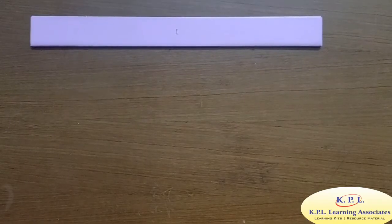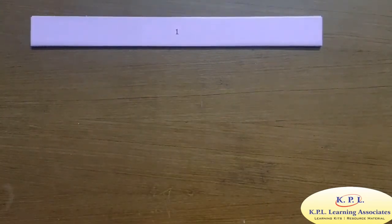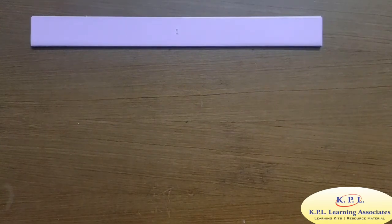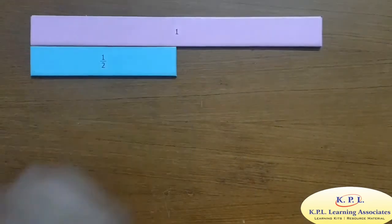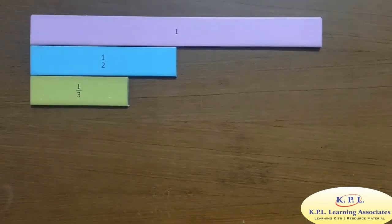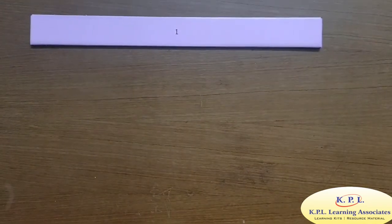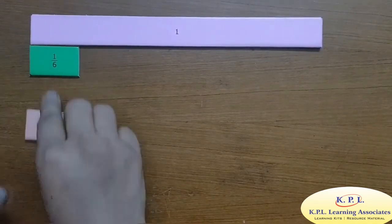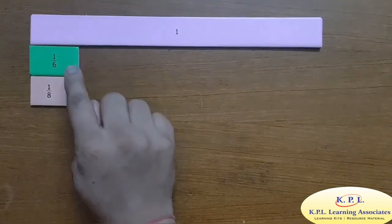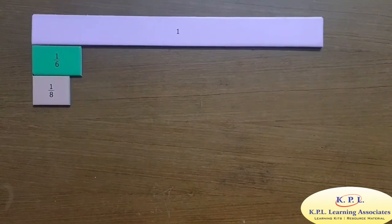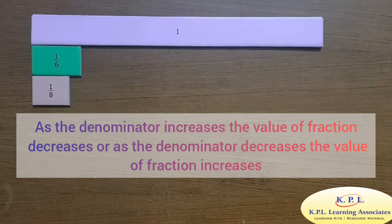Now let us compare some unit fractions where the numerator is one. Here I have one by two and one third. We can see that one by two is greater than one third. Let us take one more example. Here I have one sixth and one eighth. We can see that one sixth is greater than one eighth. We can observe that as the denominator increases, the value of the fraction decreases. Or we can say that as the denominator decreases, the value of the fraction increases.